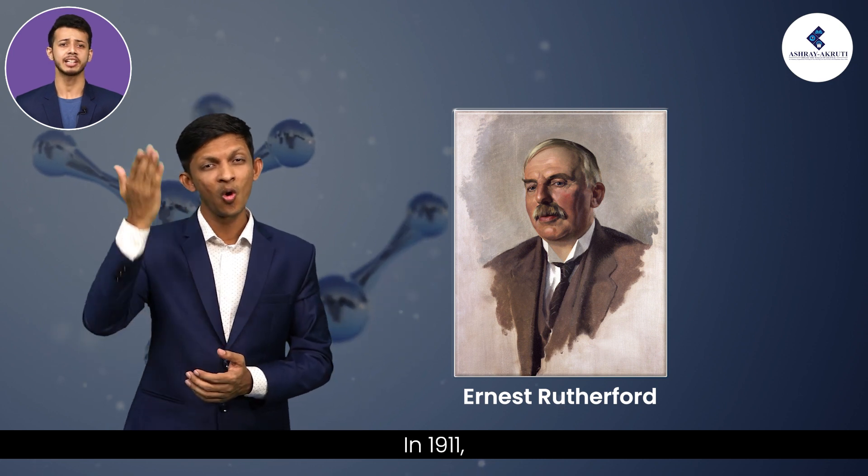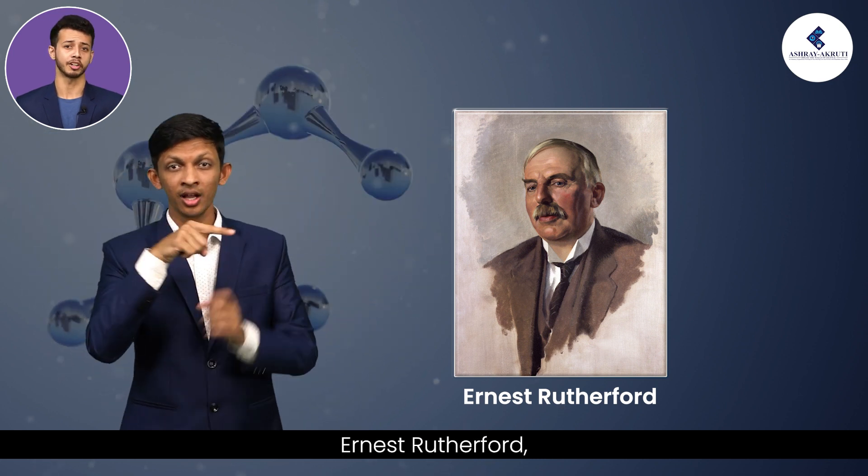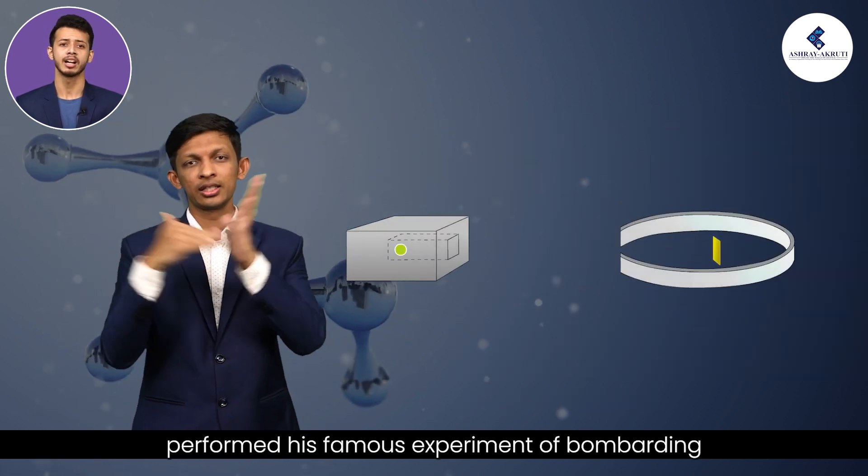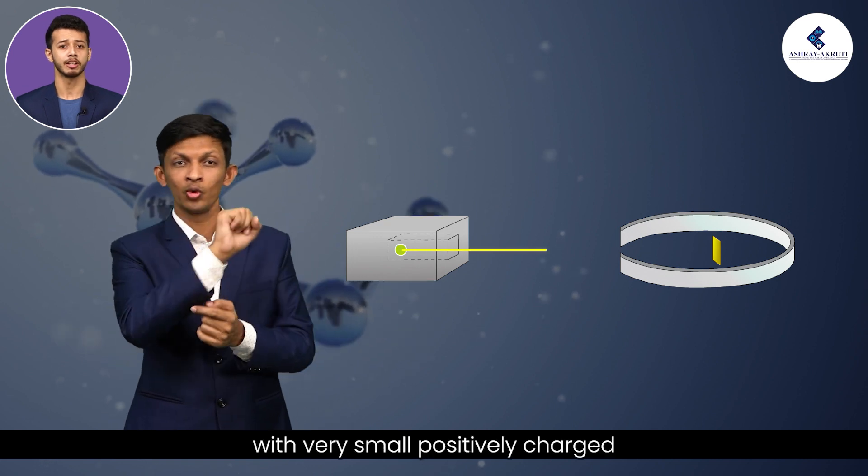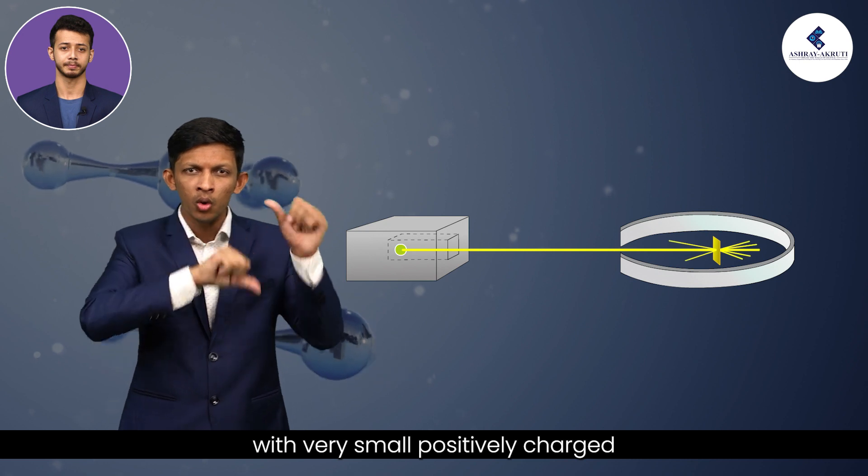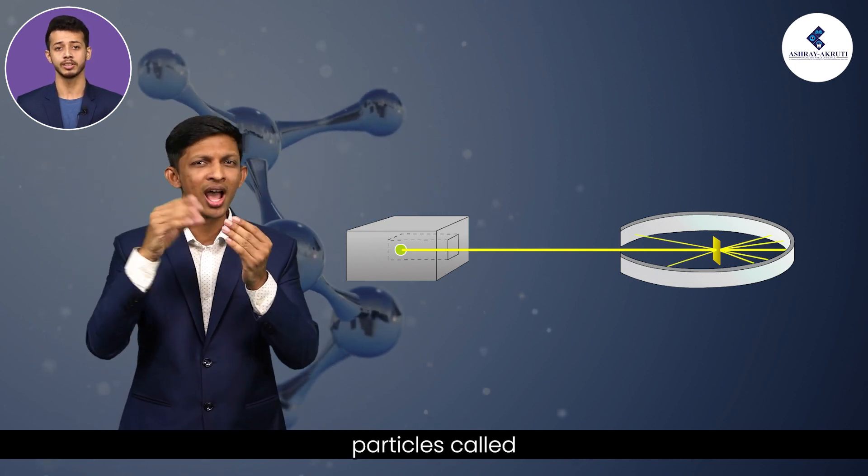In 1911, Ernest Rutherford, a scientist from New Zealand, performed his famous experiment of bombarding a thin gold foil with very small positively charged particles called alpha particles.